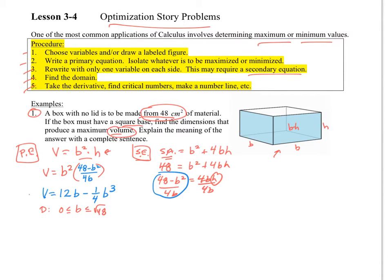Now we want to optimize this equation. We're going to take the derivative, which would be V' = 12 - (3/4)b². That is the derivative. And I want to take that and set it equal to 0 in order to find the critical values. So if I solve, then I get b = ±4. However, this is all going to be positive quantities because we're dealing with geometry.